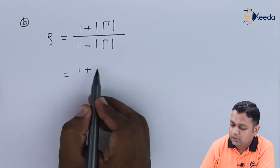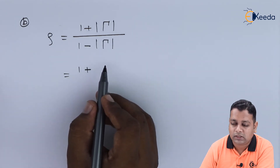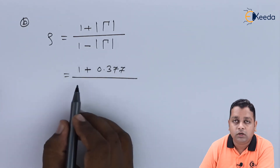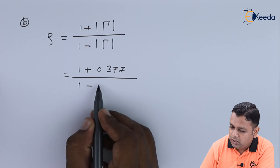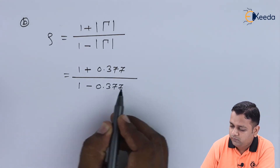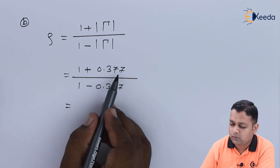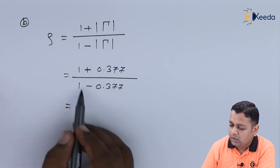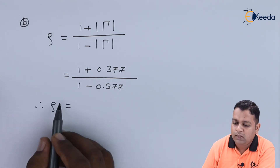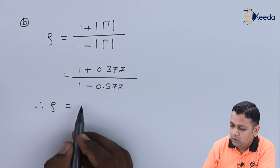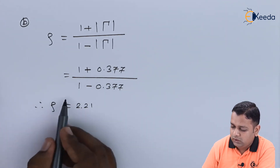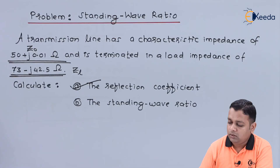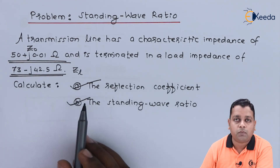Substituting the magnitude from part a, which is 0.377: the numerator becomes 1 plus 0.377 equals 1.377, and the denominator becomes 1 minus 0.377 equals 0.623. Therefore, the standing wave ratio rho equals 2.21.